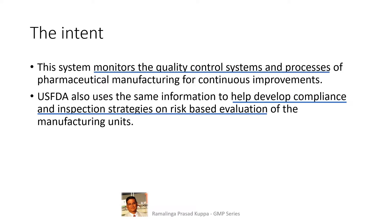The quality metrics guideline prescribes that this guidance outlines FDA's authority to require owners and operators of such establishments to provide, upon request, records and information that FDA may inspect under Section 704 of the Federal Food, Drug and Cosmetics Act. Based on the data, FDA calculates the quality metrics of the product and practices.